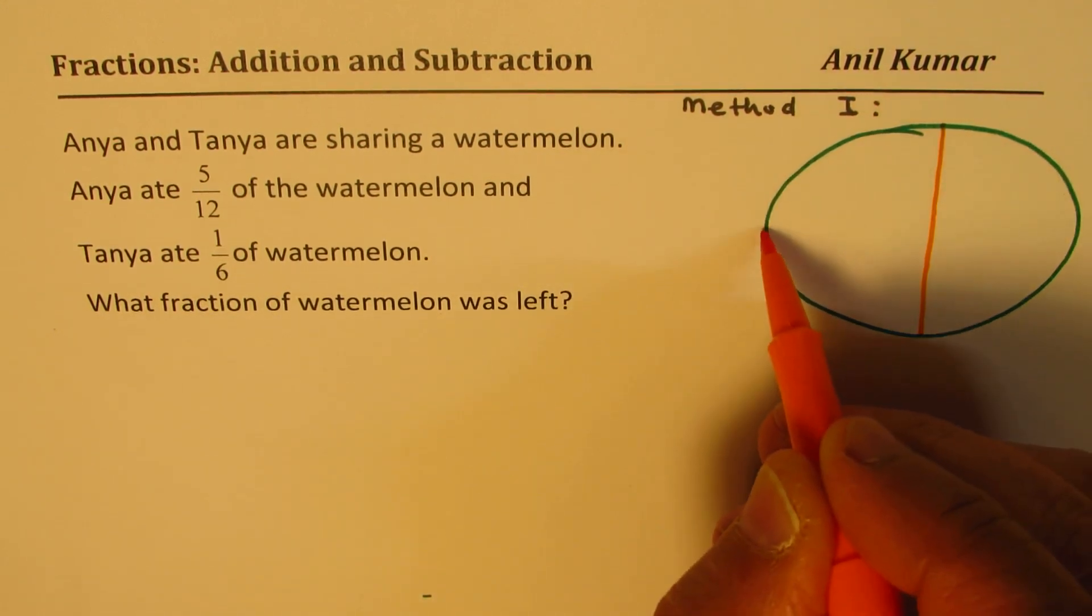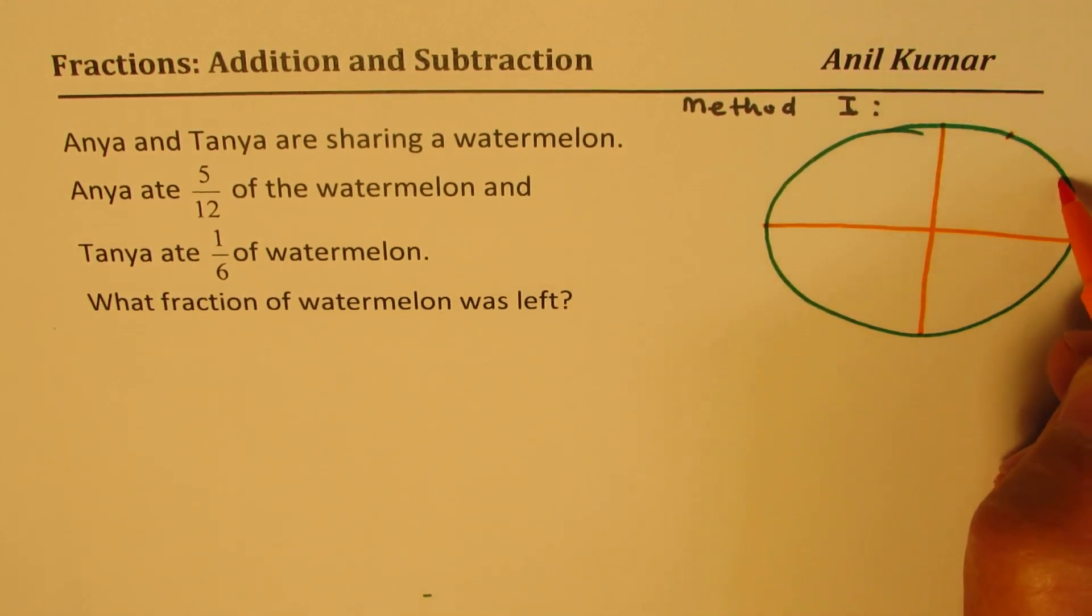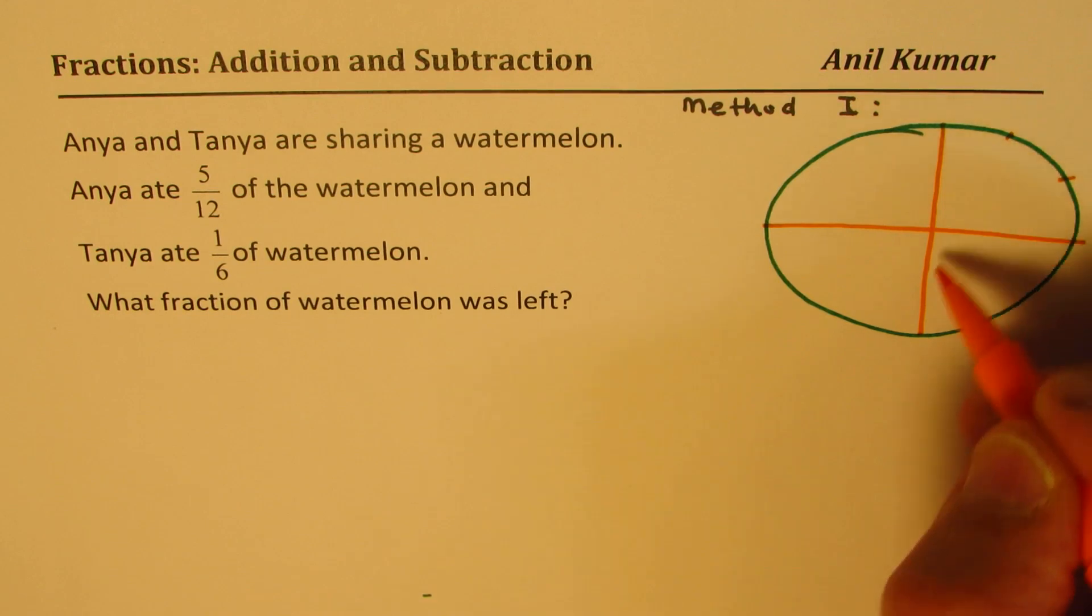So we get 4. Now each 4 we will divide into 3 parts. So we get 12.